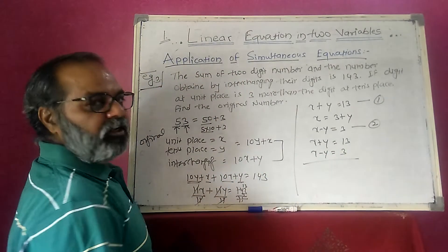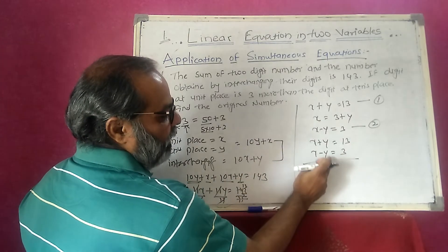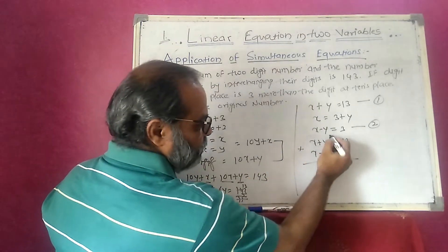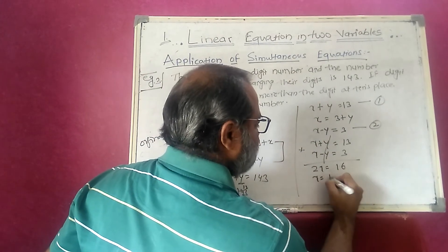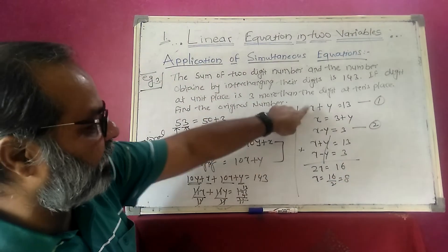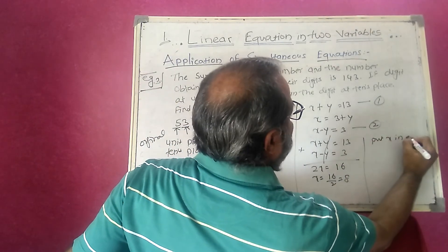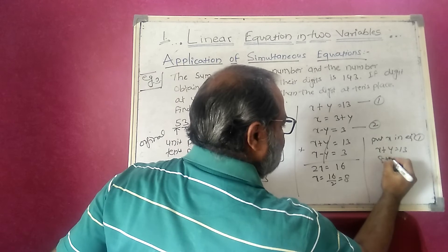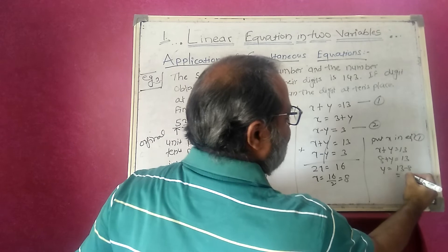The coefficients of y are already equal and opposite, so adding the two equations eliminates y. Plus y and minus y cancel. x plus x gives 2x, and 13 plus 3 gives 16. So x equals 16 divided by 2, which is 8. Substituting x equals 8 into equation 1: 8 plus y equals 13, so y equals 13 minus 8, which is 5.